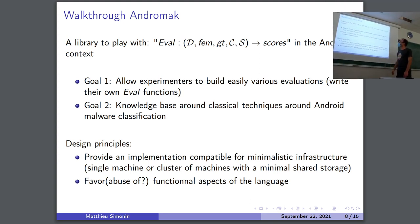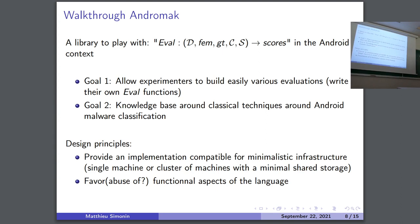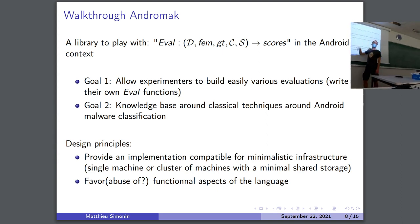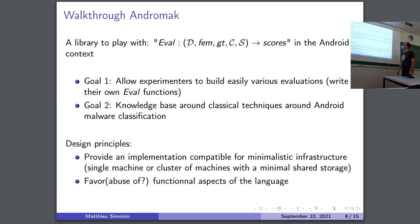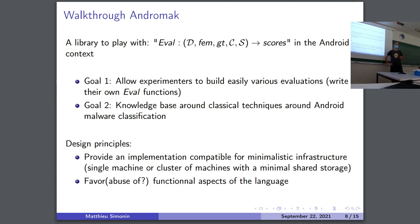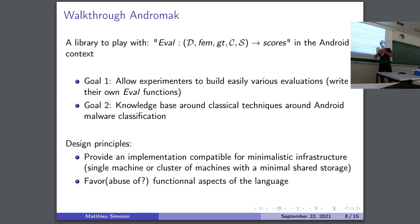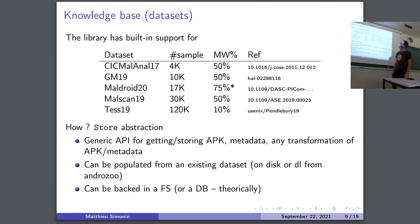This is where Andromac comes into play. The idea of Andromac is to fix this dataset–feature–ground-truth coupling by trying to decouple them. The goal is to allow experimenters to do various evaluations, and also to use this tool as a knowledge base — meaning the tool includes reference algorithms, feature extraction methods, default classification models, and default datasets, so that you can reproduce some of the state-of-the-art and compare with your own.